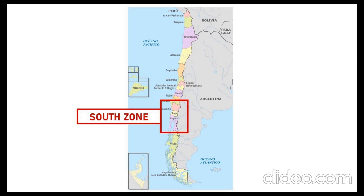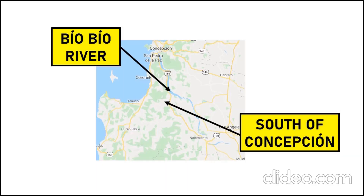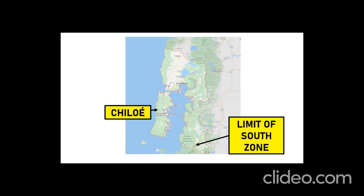Today we are going to talk about the South Zone. The first thing we must know about the South Zone is its location. It begins south from the Bio Bio River, up to part of Chiloé and in front of Chiloé in the Región de los Lagos. More or less, that's the Zona Sur, or South Zone.